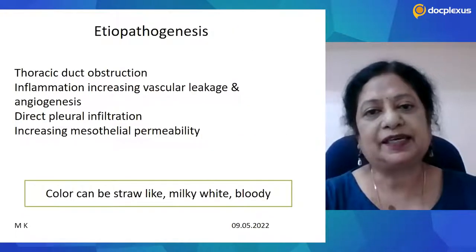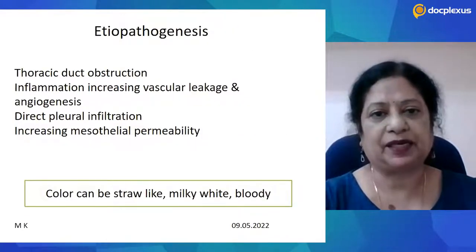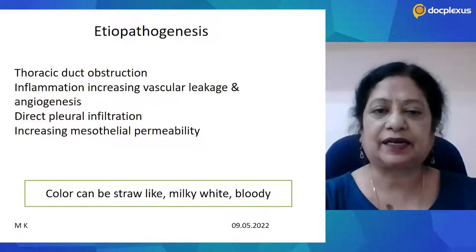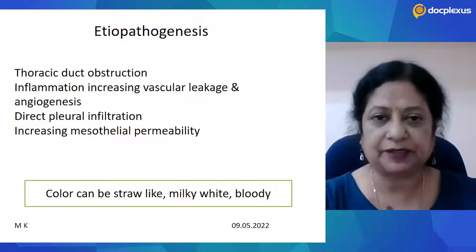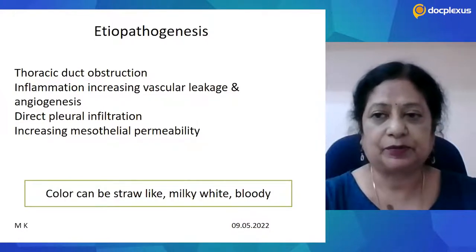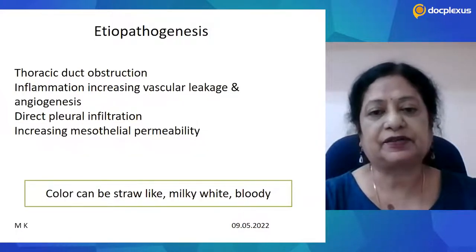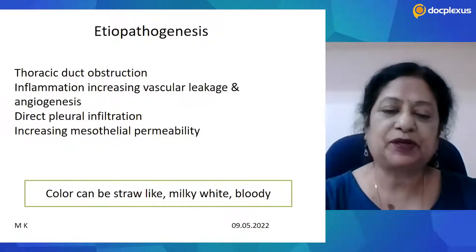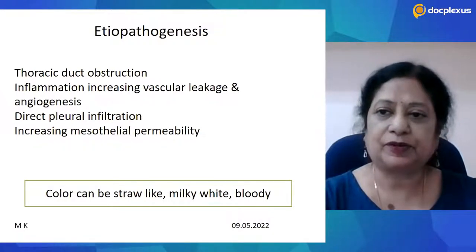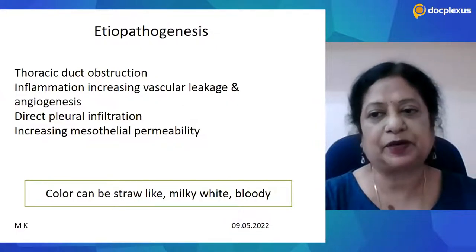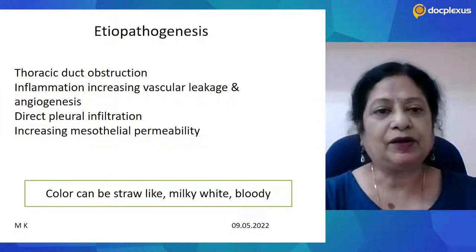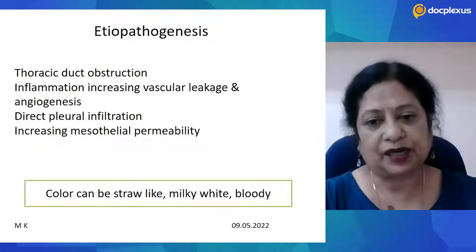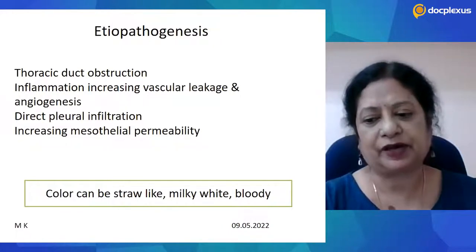The etiopathogenesis of MPE is possible through various mechanisms. First is thoracic duct obstruction, where the lymphatics get obstructed, and we can even have chylous pleural effusion. Inflammation increases vascular leakage and also increases angiogenesis. There can be direct pleural infiltration, and also increasing mesothelial permeability. Depending on these mechanisms, the color of the pleural effusion can be straw-like, milky white, or even bloody or hemorrhagic.